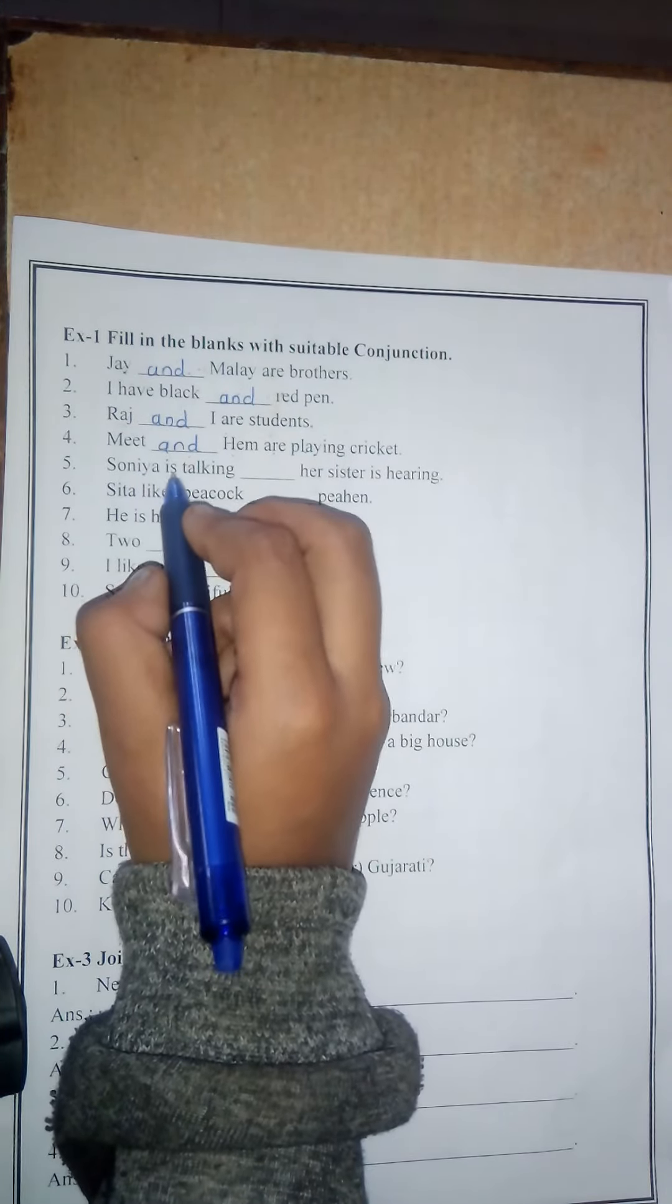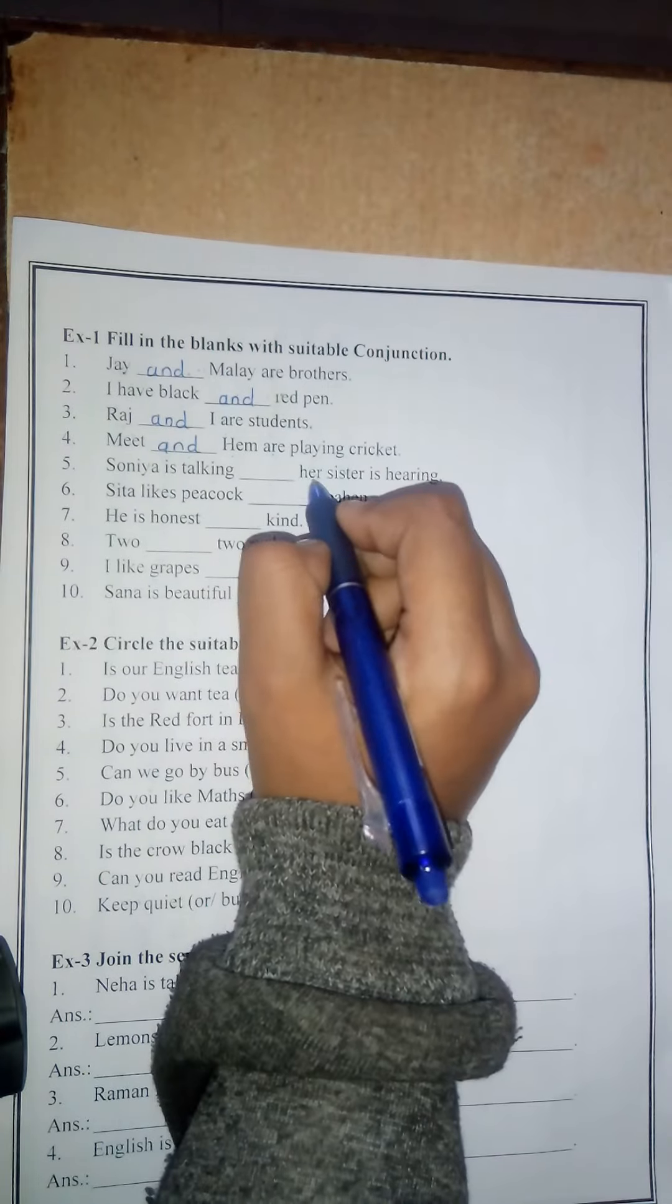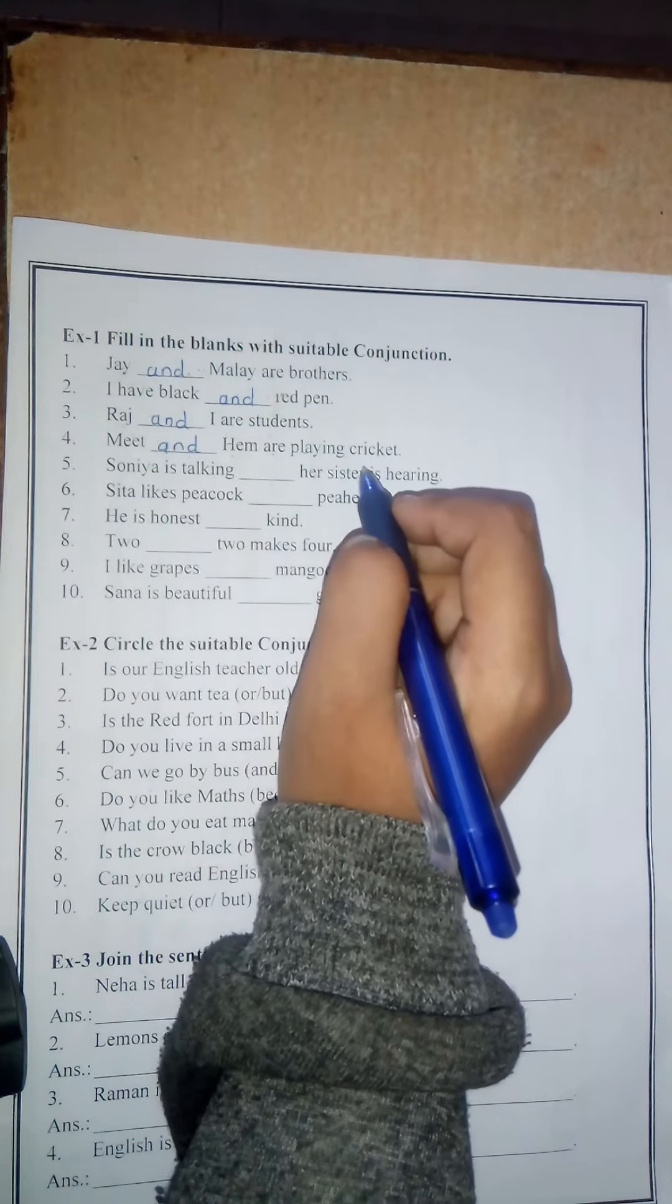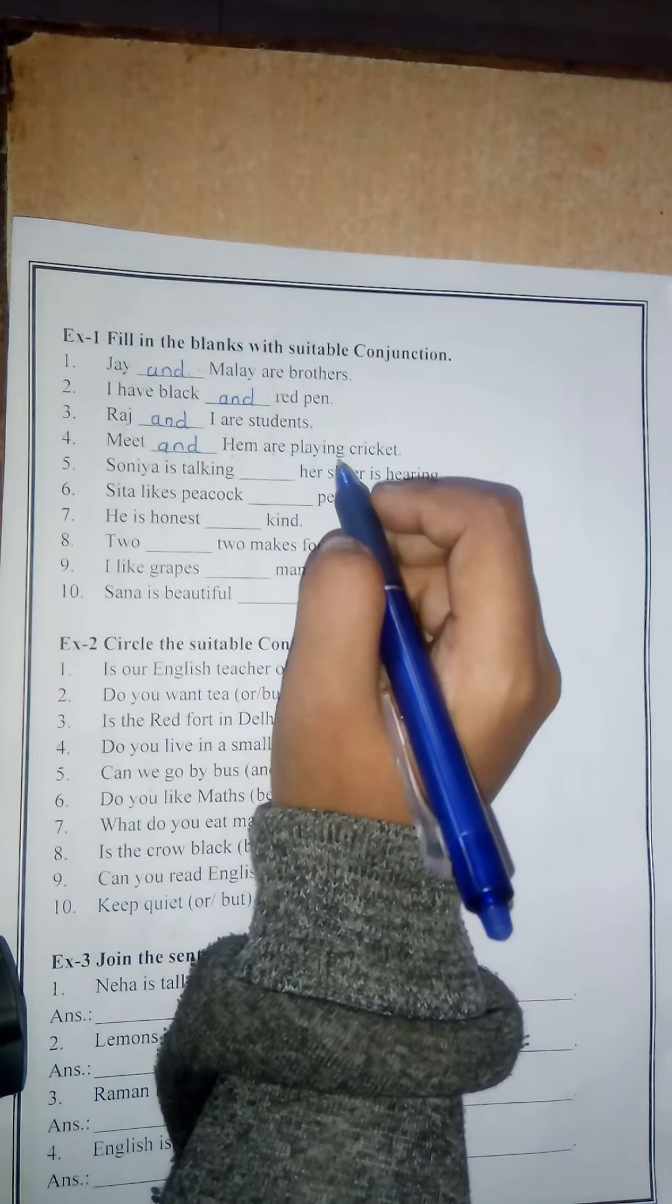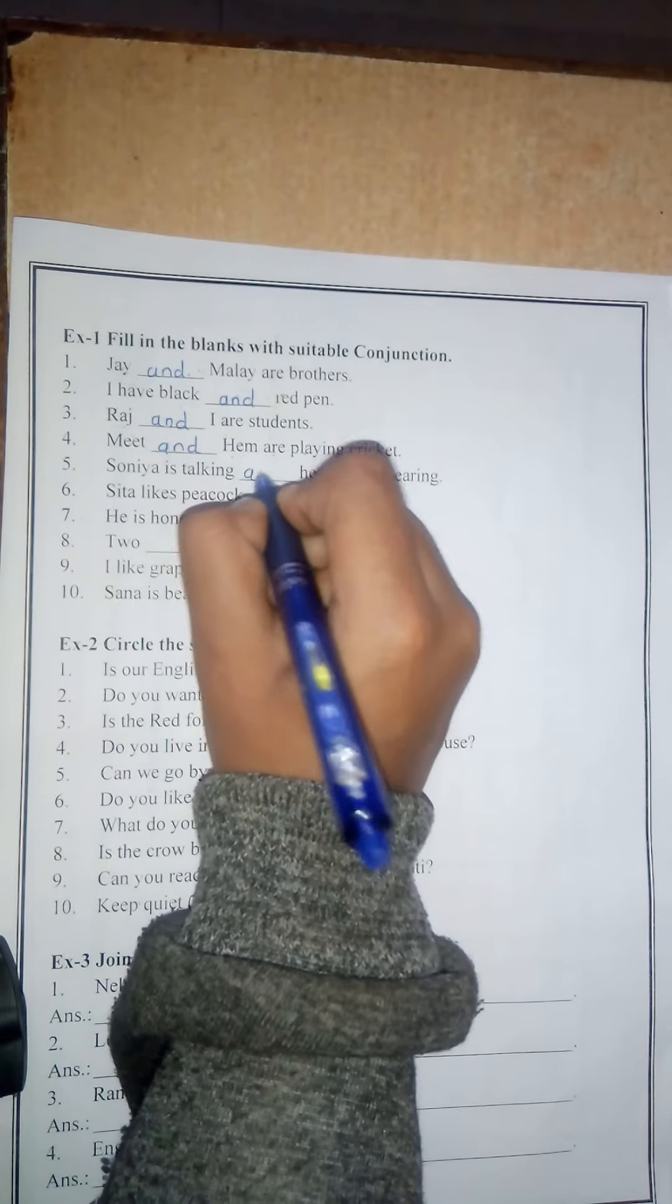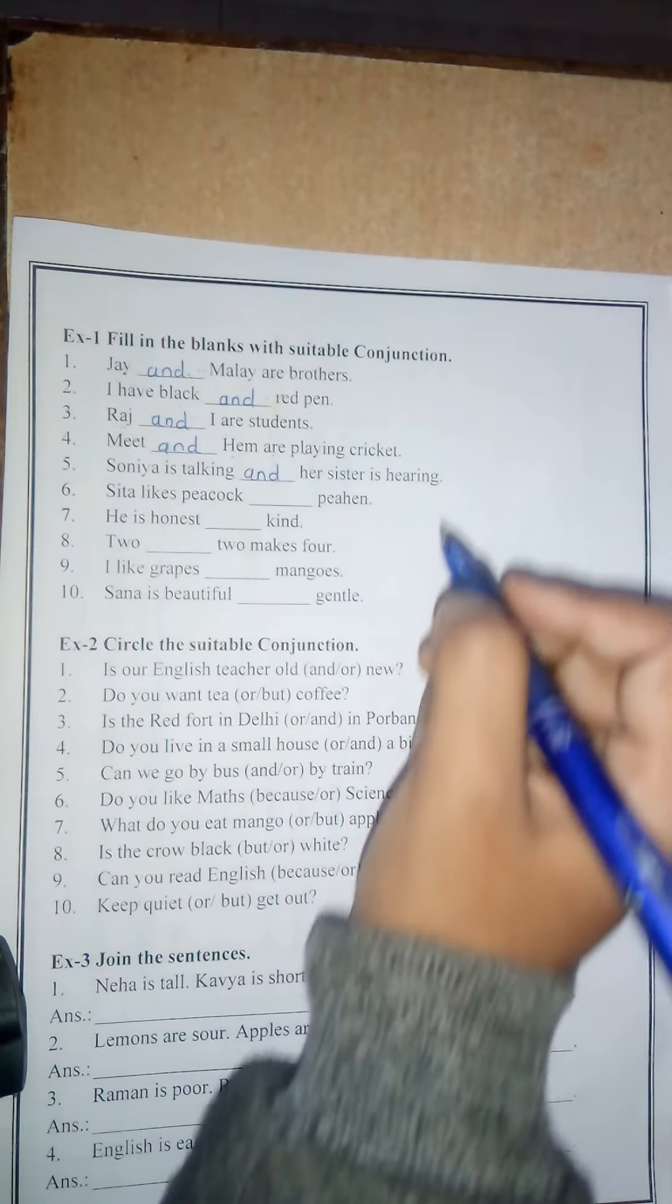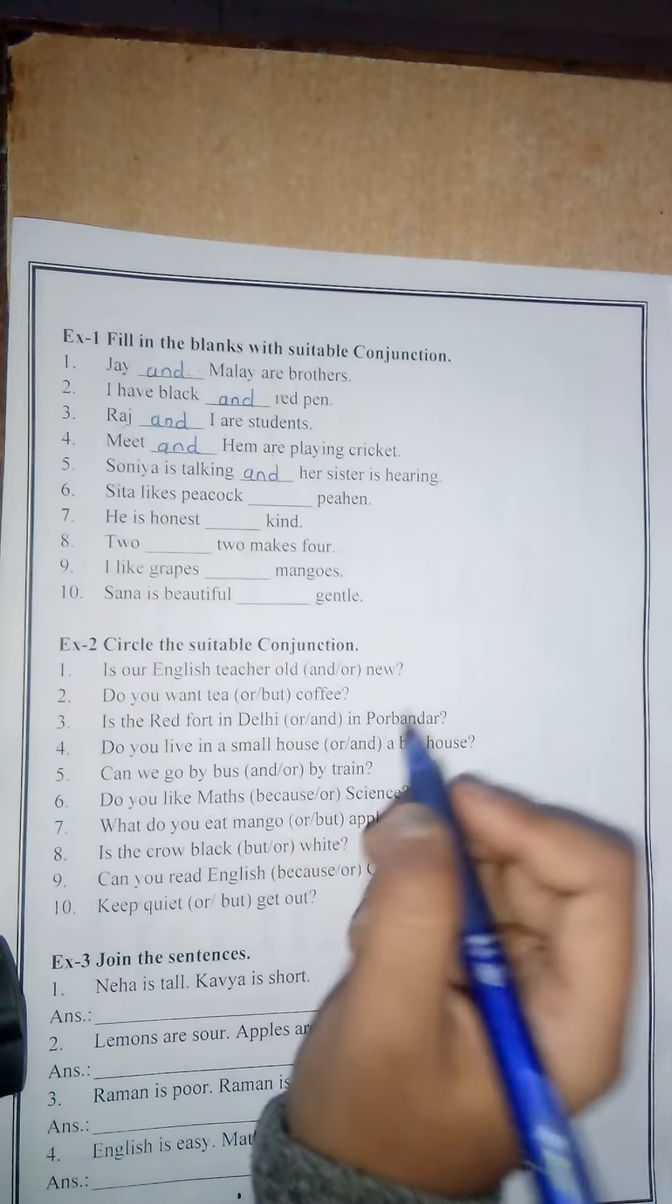Number 5: Sonia is talking blank her sister is hearing. Here you have to join both sentences, so you have to use 'and'. Sonia is talking and her sister is hearing.